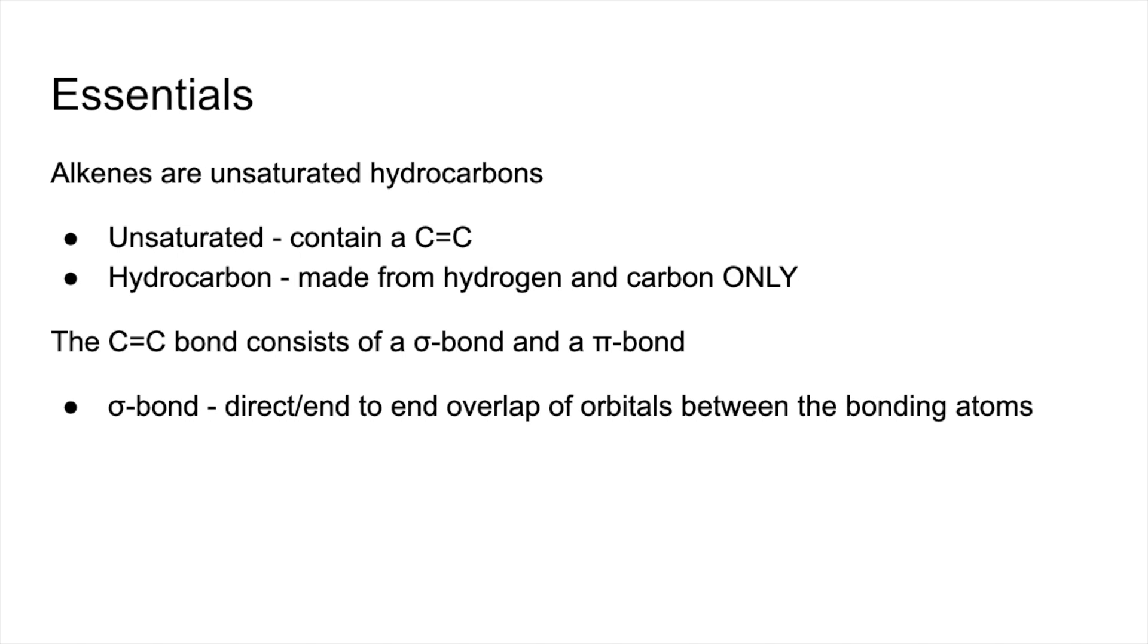The sigma bond is formed by the direct or end-to-end overlap of orbitals between the bonding atoms. The pi bond is formed by sideways overlap of adjacent p orbitals above and below the carbon atoms.